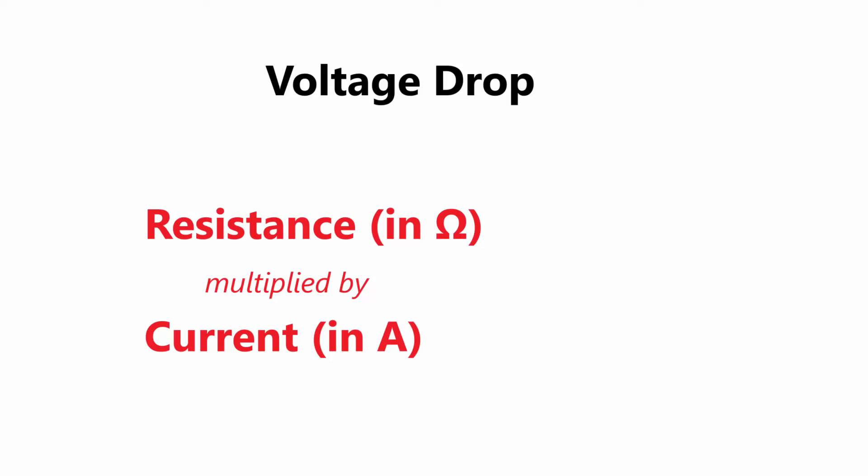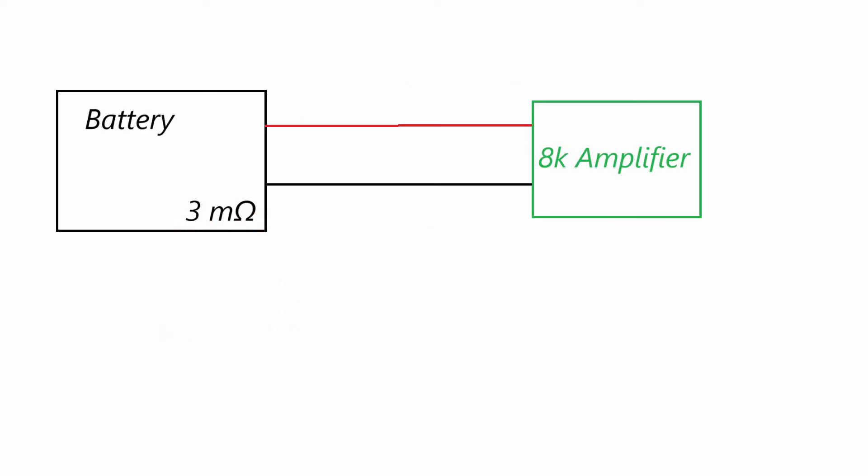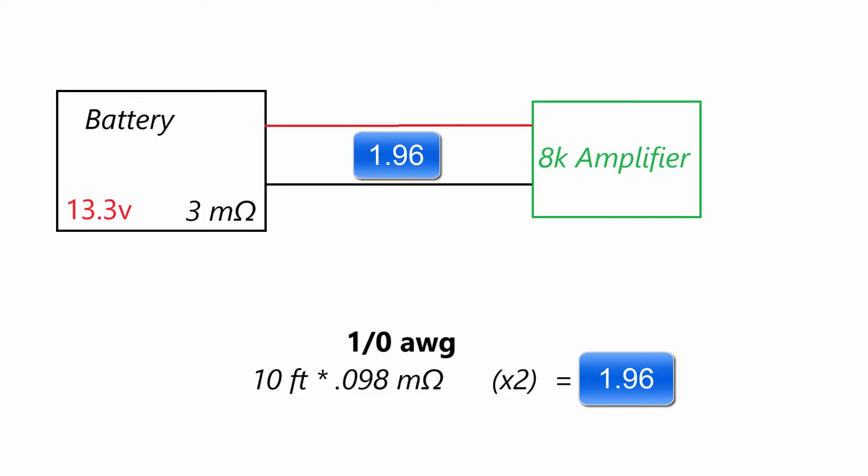Next, we're going to talk about likely the most underused formula that Ohm's law provides us for our application. And that is how to calculate the amount of voltage that we're going to lose between two points. The formula is very simple. It's just the resistance in Ohms multiplied by your current and that'll be measured in amps. To keep things simple here, we're going to assume the same battery from earlier with a three milliohm internal resistance. And we will be using the one zero AWG wire, which we previously calculated as a round trip of 0.196 milliohms added to the total resistance.